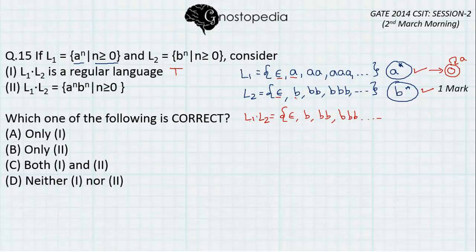Secondly, we take a and concatenate it with every other element in L2. We get a, ab, a, b, b and so on. Similarly, this process will be applied for each and every element in these sets.